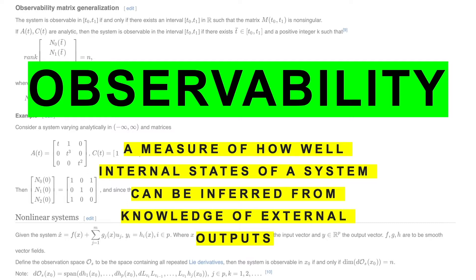Here you can see the definition of the term observability. This term has its origins in the control theory space — there's actually a lot of super interesting stuff to dig into in control theory and feedback systems. The basic thought here is that our systems are of course complex, and the best chance we have to understand them is to approximate their internal states in time by looking at their externally observable outputs. That's how we come to the term observability.